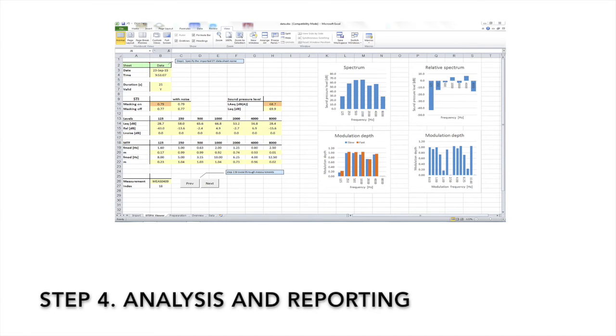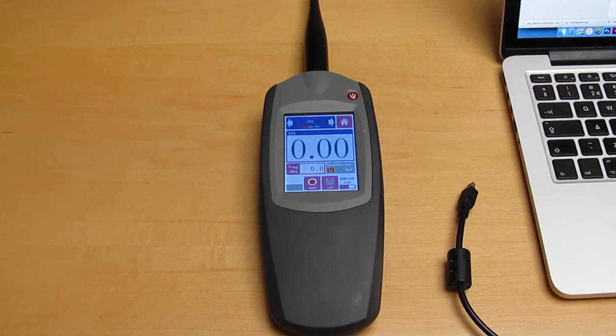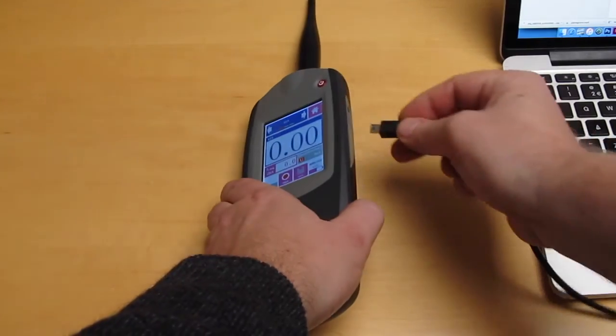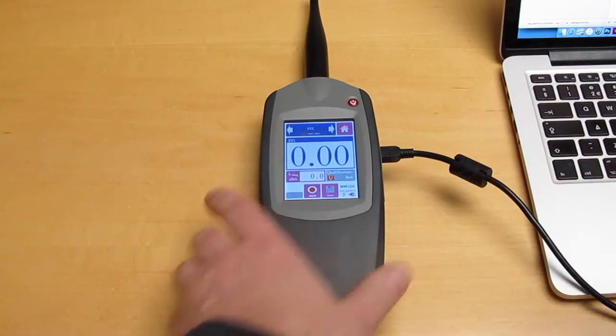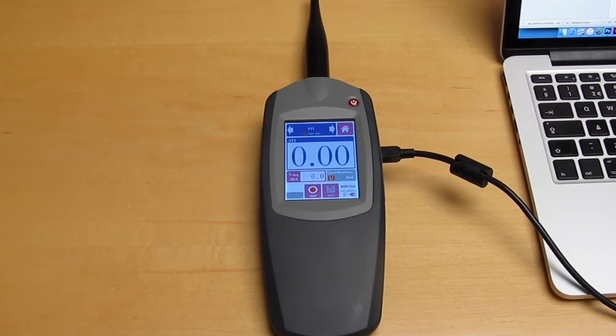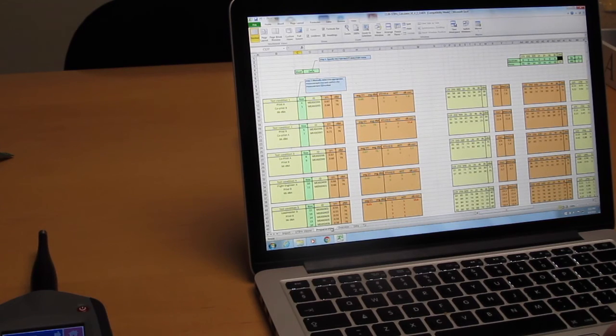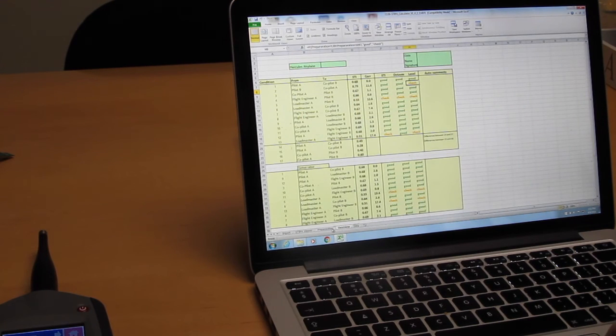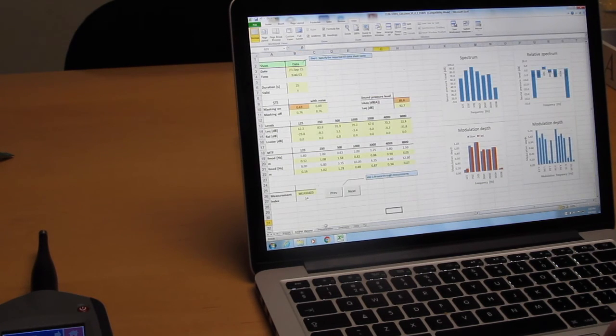Once you have completed your measurements, download all saved data to a personal computer. On the same flash drive that contains the test signals, you will find analysis tools for use with Microsoft Excel. These will help you to quickly and efficiently organize your data for inclusion in your measurement report.